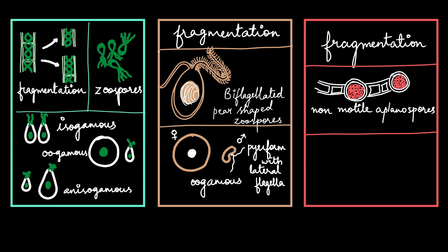Both isogamous and anisogamous are seen in red algae as well. But here the oogamous are different because both male and female gametes are non-motile but female gametes are always bigger than the male gametes.